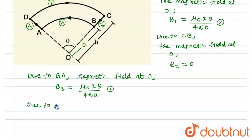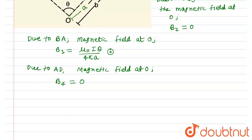Due to AD, again the magnetic field will be zero because it is just passing along point O, so the magnetic field due to section 4 will also be zero.